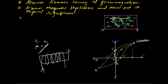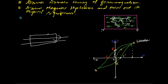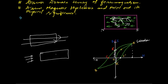From this hysteresis curve, we can figure out which material is suitable for a permanent magnet and which is suitable for soft iron cores. For a permanent magnet, we need a material with very high retentivity so it retains its magnetization, and very high coercivity so that a large reverse field is required to destroy the magnetization — meaning it is difficult to demagnetize.